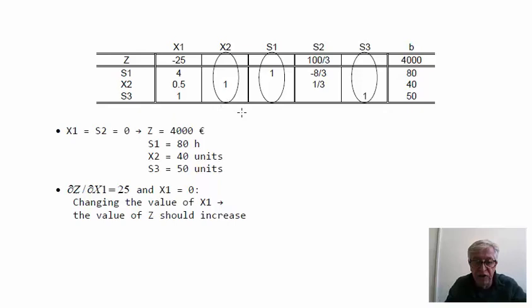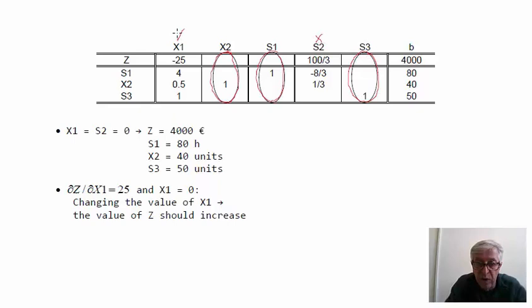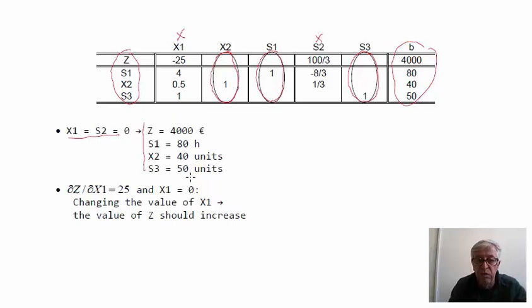After implementing these row operations, we obtain the next iteration's table. The new basic variable is x2, along with s1 and s3. The non-basic variables are s2 and x1. Setting them to 0, we read the new solution. However, there is still a negative coefficient in the Z row corresponding to x1, indicating a positive partial derivative — so this is still not the optimal solution.